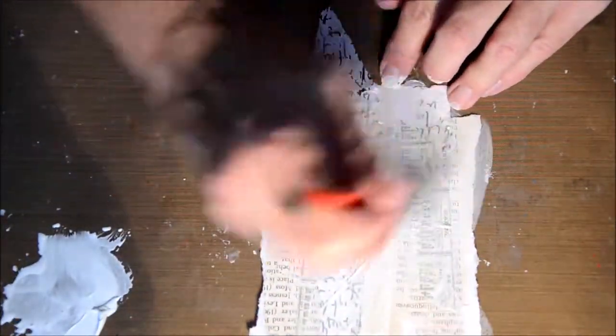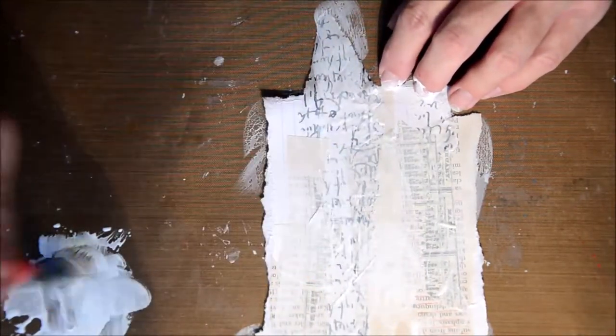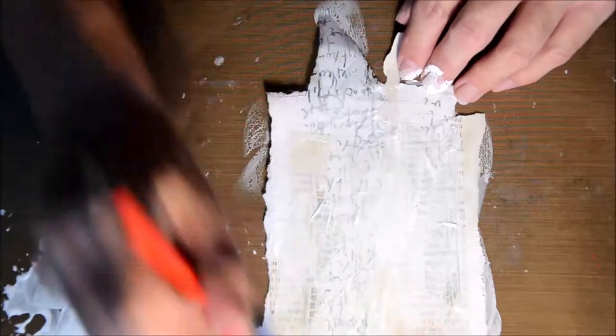So then I've just got some gesso. It's just an Atelier. It's called the Gesso Primer, which is really, really thick. So I've just watered it down just a little bit because I only wanted a thin coat so you could still see the text and all the bits and pieces in the background.